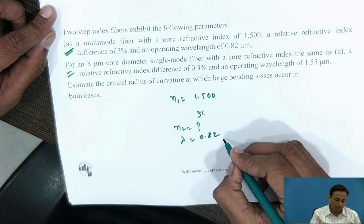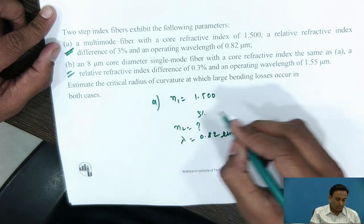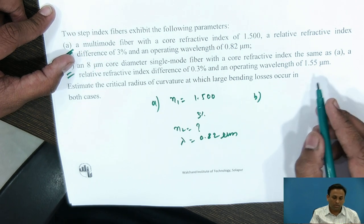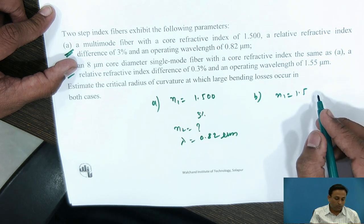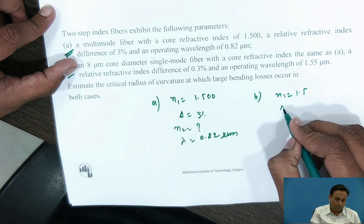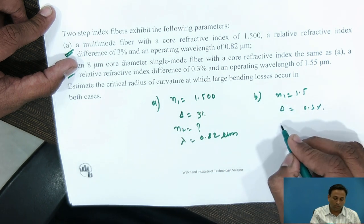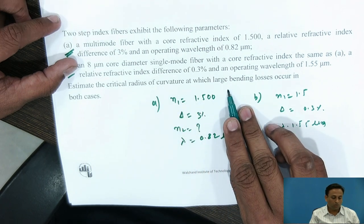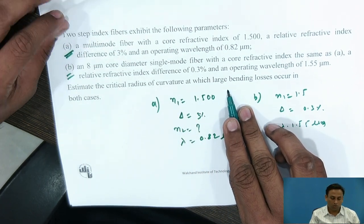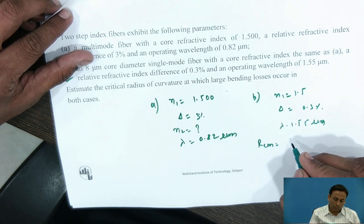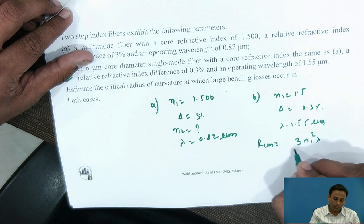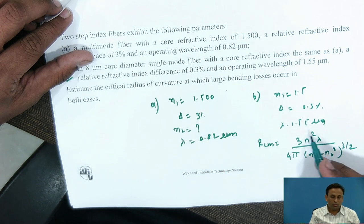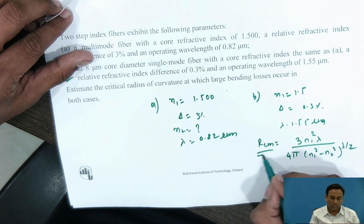Case B is a single-mode fiber with core diameter 8 micrometers, N1 = 1.5, relative refractive index difference Δ = 0.3%, and operating wavelength λ = 1.55 micrometers. We need to estimate the critical radius of curvature at which large bending loss occurs in both cases. For RCM, the formula is: RCM = 3·N1²·λ / (4π·(N1² − N2²)^(3/2)).